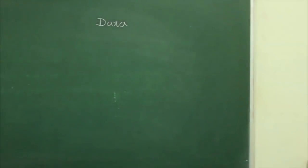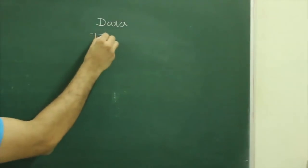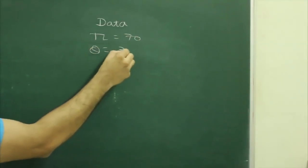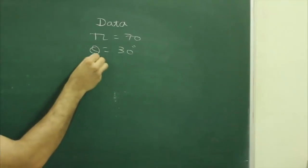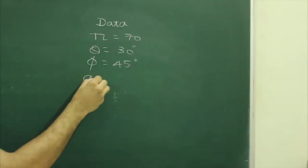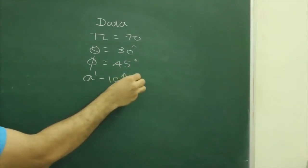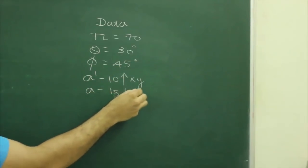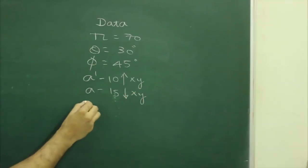First we will write given data: theta true length TL equals 70, theta 30 degree, phi 45 degree, a dash 10m above xy line, a 15 below xy line, and point b is in second quadrant.